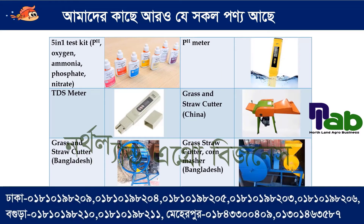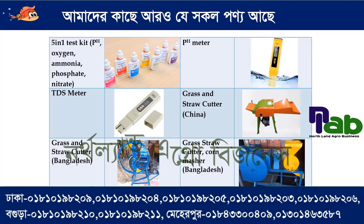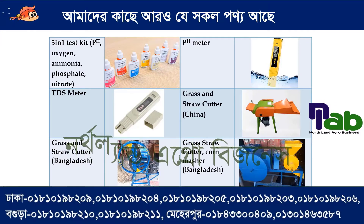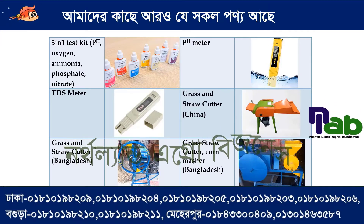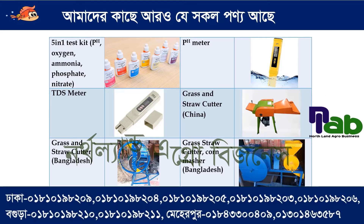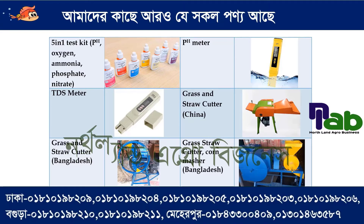We have 5-in-1 test kit and PES test kit. Dissolve oxygen, ammonium, phosphate, and nitrate. We have pH meter, TDS meter, and grass and straw cutter made by China.